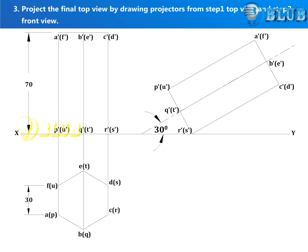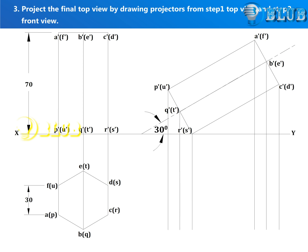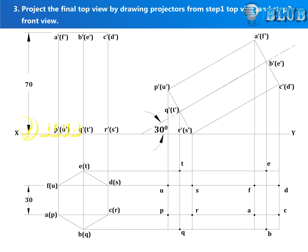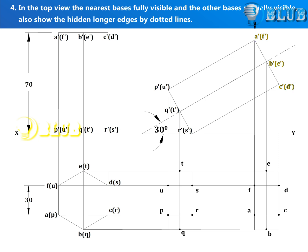Project the final top view by drawing projectors from the step 1 top view and step 2 front view. In the top view, the nearest base is fully visible and the other base is partly visible. Also show the hidden longer edges by dotted lines.